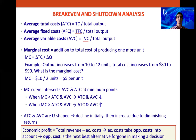Total costs are the sum of fixed costs and variable costs. And the marginal cost is the addition to total cost of producing one more unit — marginal always means one more. To work it out, we take the change in total cost divided by the change in quantity. For example, if output increases from 10 to 12 units and total cost goes from $80 to $90, that's a $10 increase over 2 units, giving a marginal cost of $5 per unit.